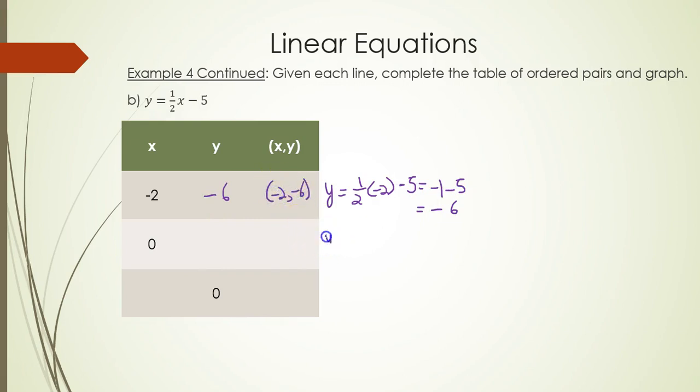What happens when x is 0? y = ½x - 5. So -5. x is 0 in the ordered pair and y is -5.